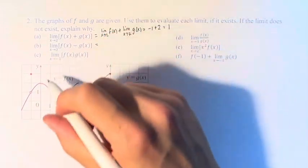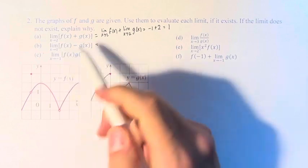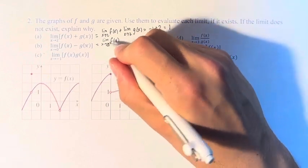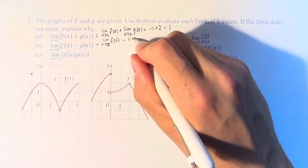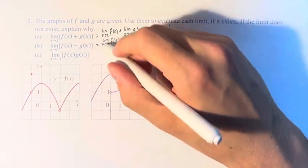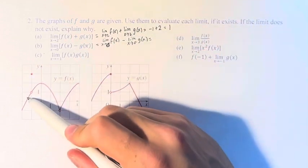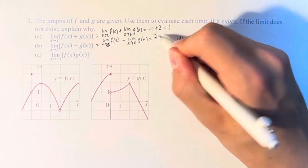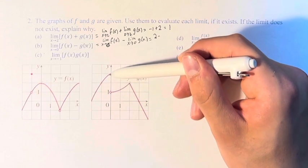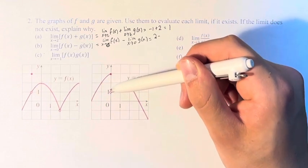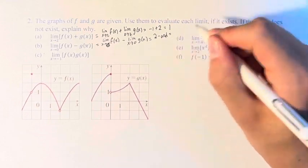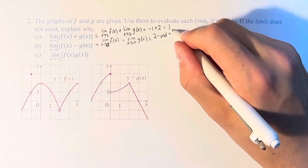In part b, we have the limit as x approaches 0 of f(x) minus g(x). We can separate them — the limit of f(x) minus the limit of g(x). The limit as x approaches 0 of f(x) is this point right here, with a value of 2. Minus — as x approaches 0, g(x) approaches from the left this point with a value of 3, and from the right this point with a value of 1. So it's approaching different values from the left and right, so it's undefined — the limit does not exist.